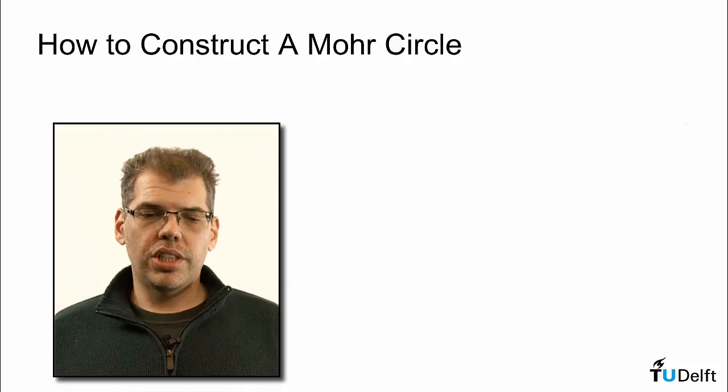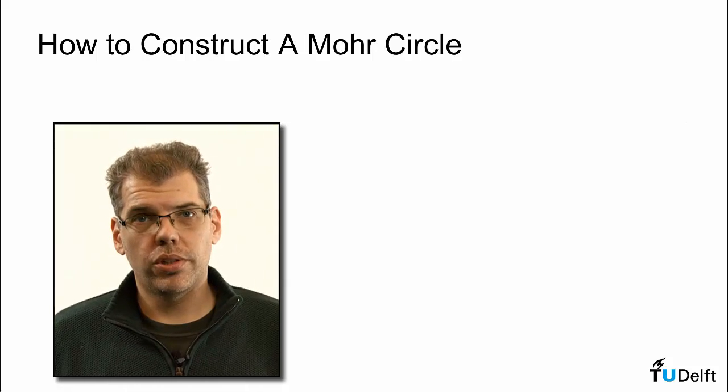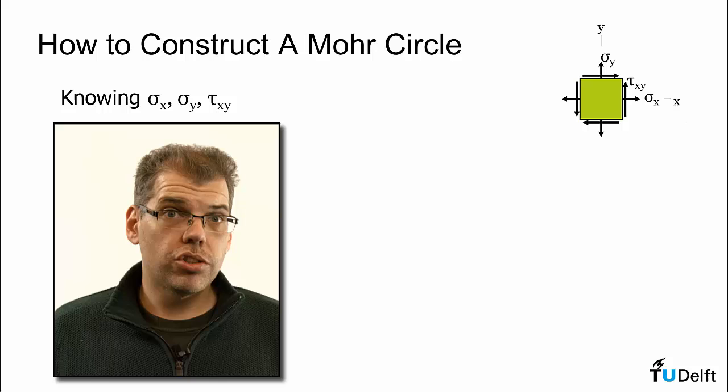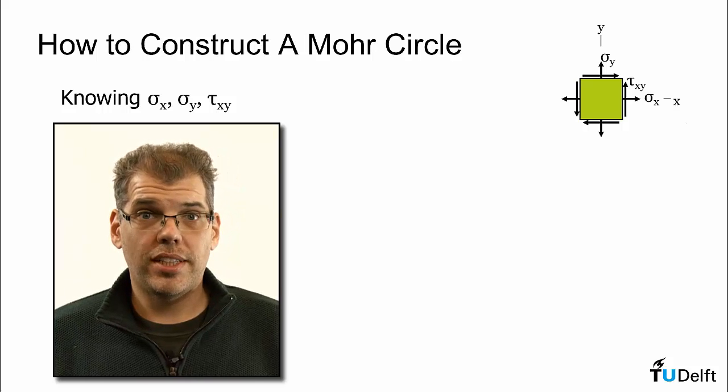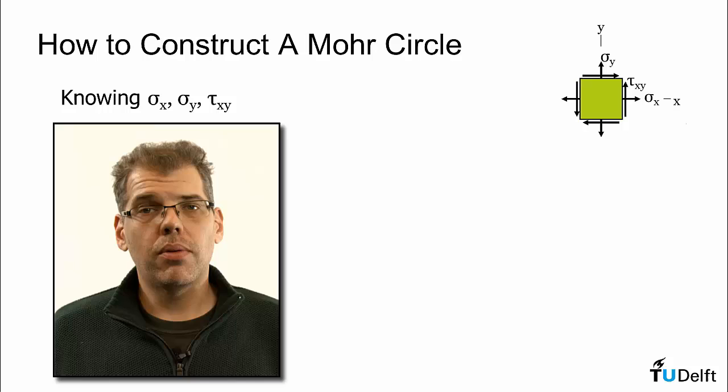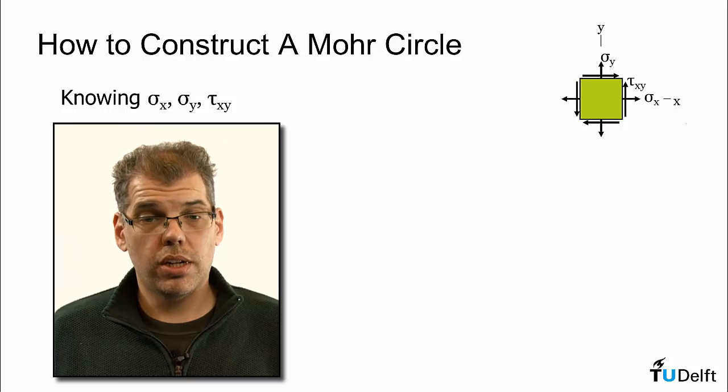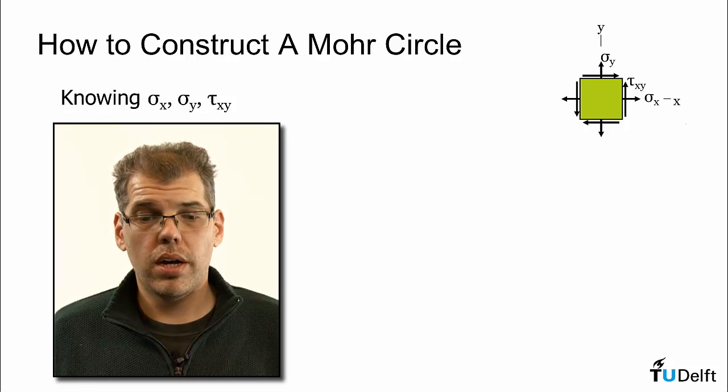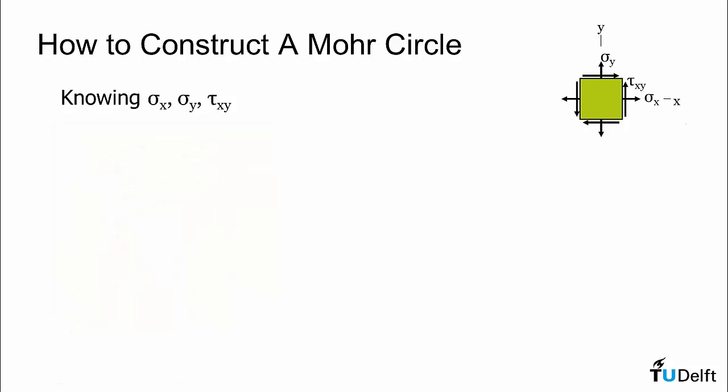Now let's take a look at the procedure of how to construct a Mohr circle. In order to construct a Mohr circle, we actually need a known stress state. So we will assume that we have two normal stress components, sigma x and sigma y, and a shear stress component, tau xy.